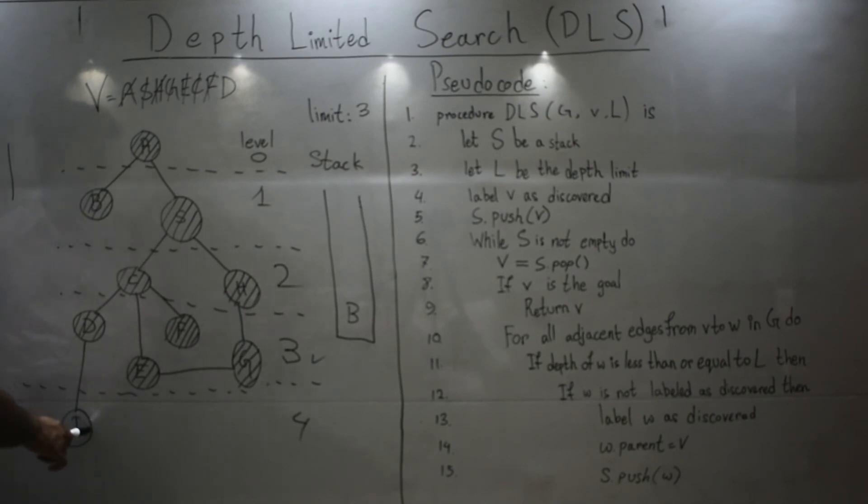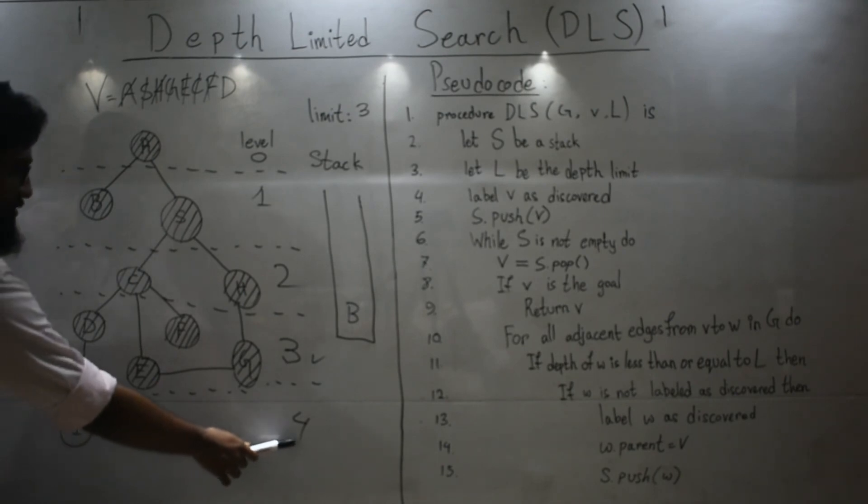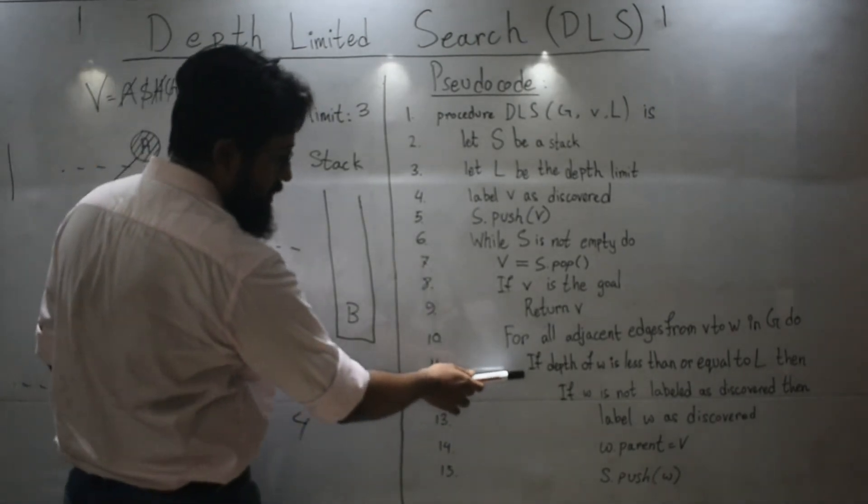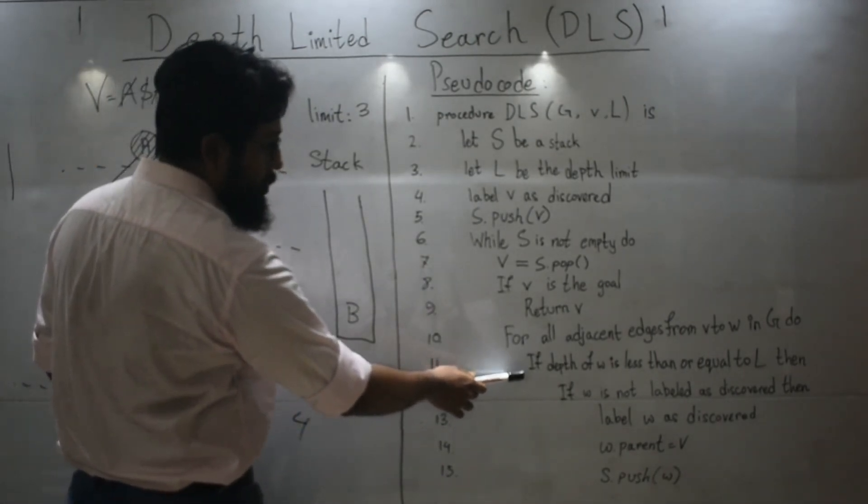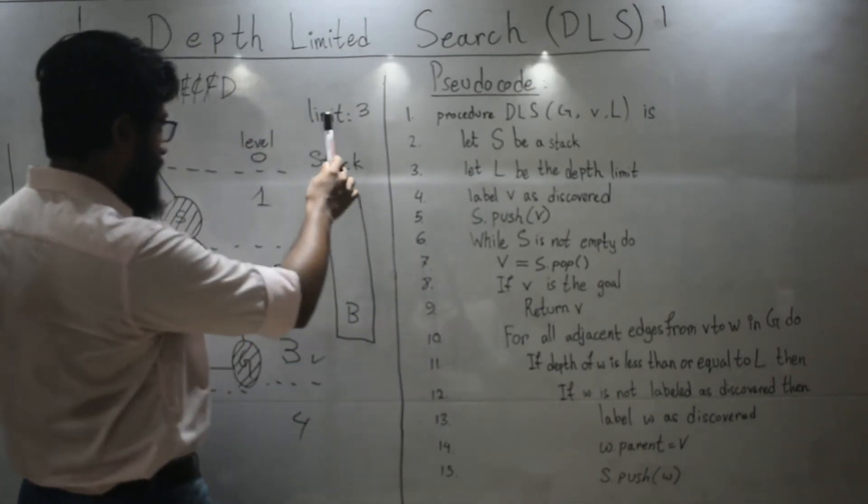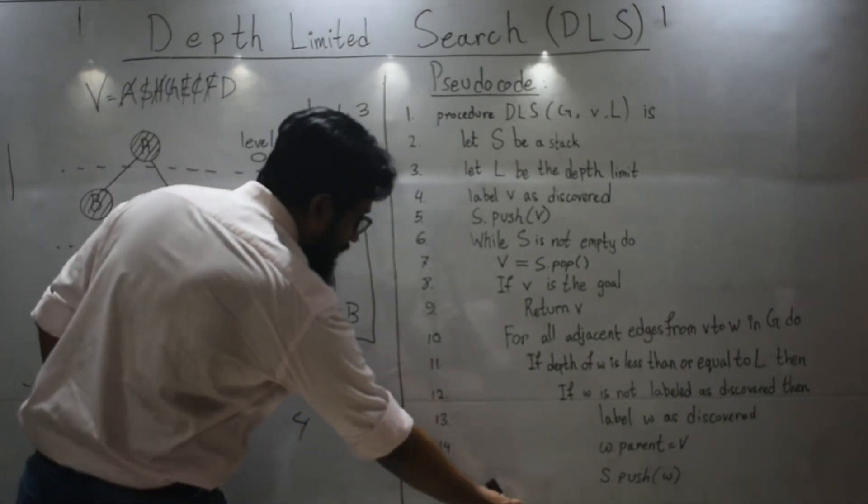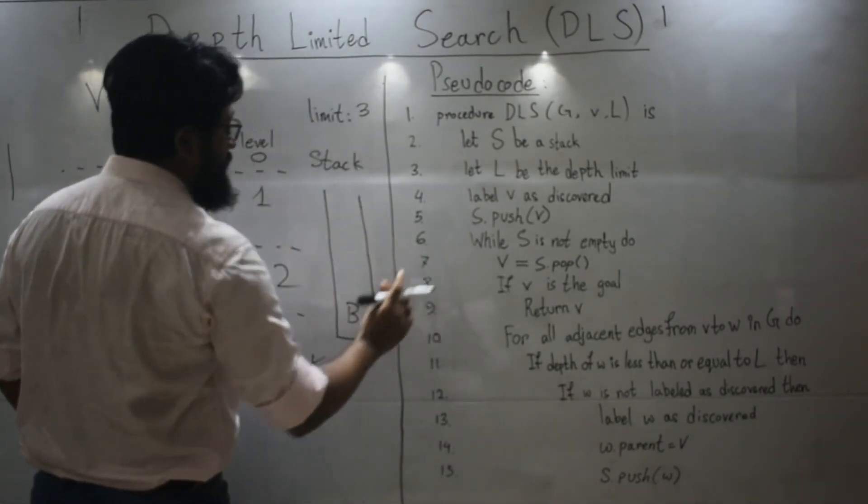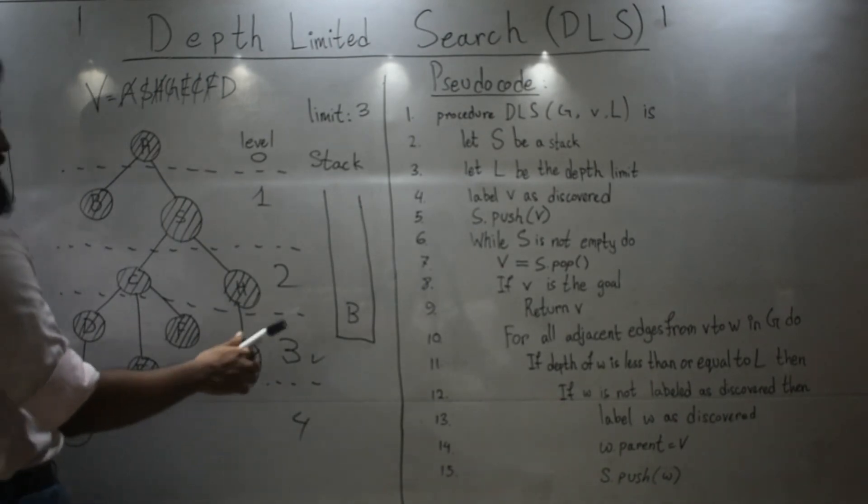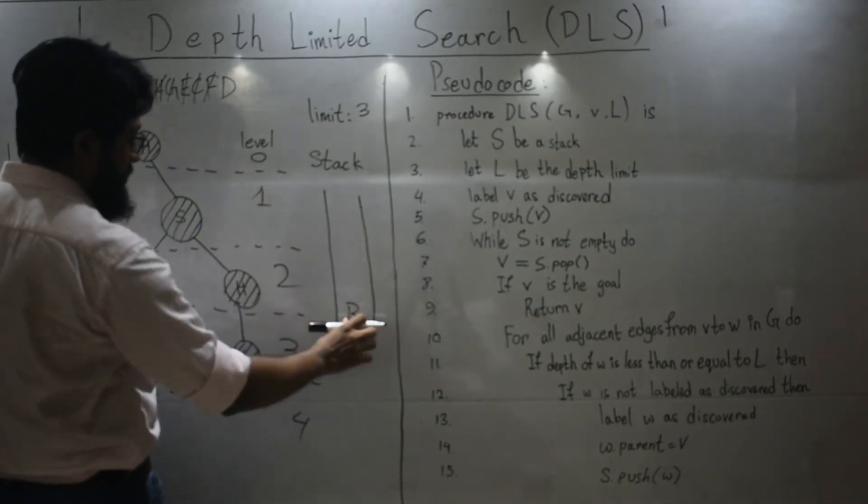Which has not yet been visited. However, I has a level of four. So that is more than my limit. So I will not be visited, neither will it be pushed. So what are the other neighbors? C, it has already been visited. So all these will skip it.